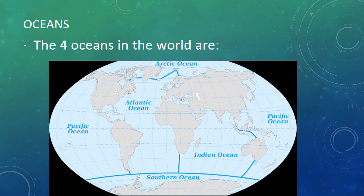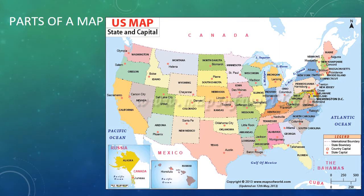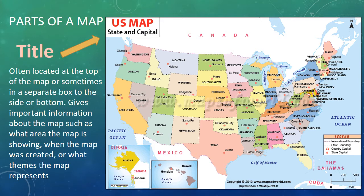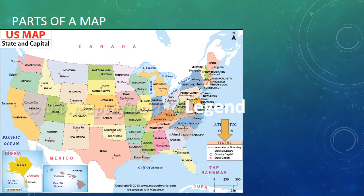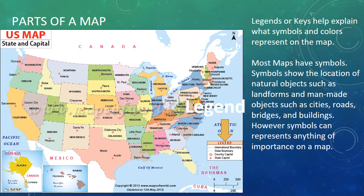Parts of a map: the title is often located at the top of the map or sometimes in a separate box to the side or bottom. It gives important information about the map such as what area is shown, when the map was created, or what themes the map represents. Legends or keys help explain what symbols and colors represent on the map. Most maps have symbols that show the location of natural objects such as landforms and man-made objects such as cities, roads, bridges, and buildings. Symbols can represent anything of importance on a map.